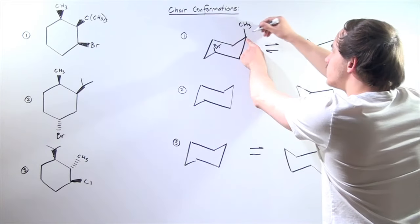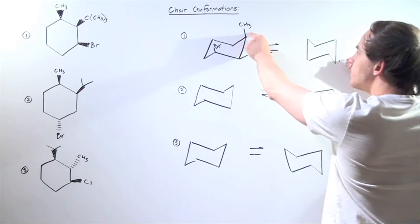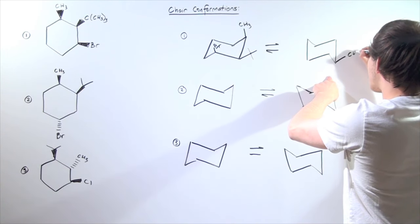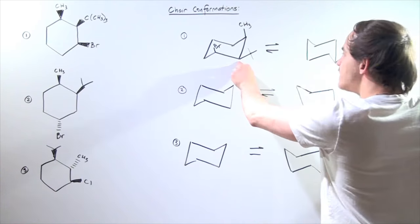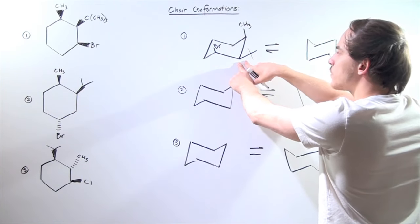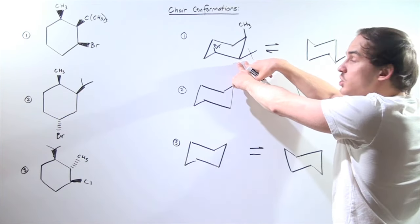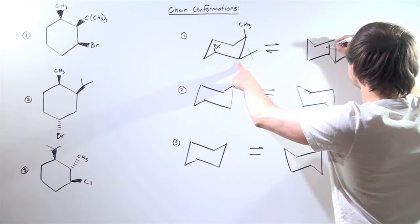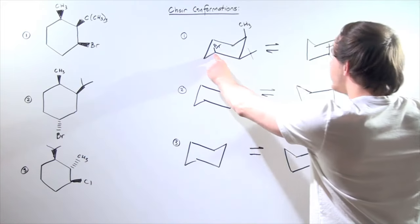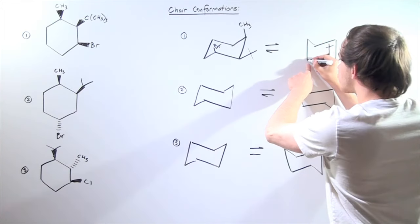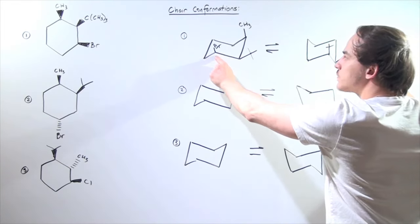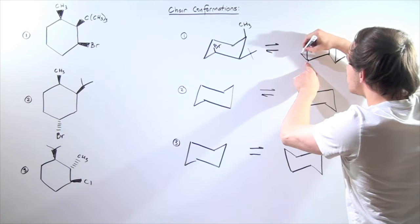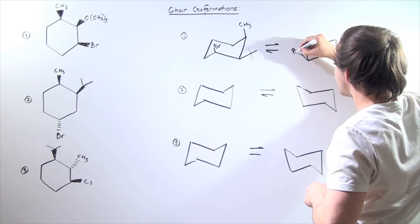This carbon is now located here, and our methyl group goes from axial to equatorial — so this is our CH3. This carbon is now here, and tert-butyl goes from being equatorial to being axial. Finally, this carbon is now here, and our Br goes from being in the axial position to being in the equatorial position — so this is our Br.